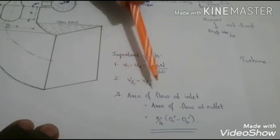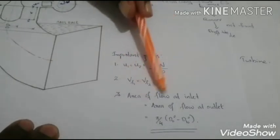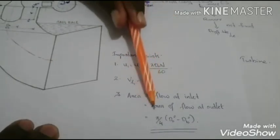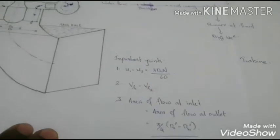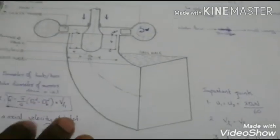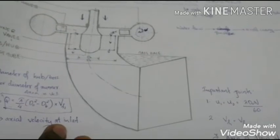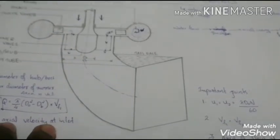And also area of flow at the inlet is equal to area of flow at the outlet and is given by π/4(DO² - DB²). So that must be taken care while doing problems.